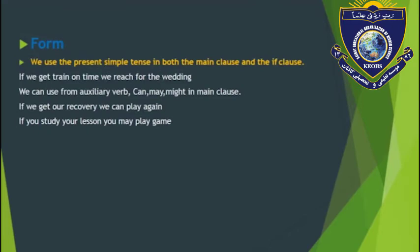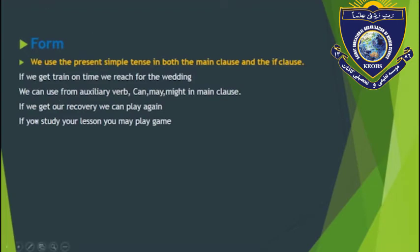Regarding the form of the zero conditional sentence: we use the simple present tense in both the main clause and the if-clause. For example: 'If we get a train on time, we reach for the wedding.' Here, the if-clause uses simple present tense and the main clause also uses simple present tense. We can also use the auxiliary verb 'can' in the main clause — for example: 'If we get our recovery, we can play a game.' Here, 'can' is an auxiliary verb used in the main clause.